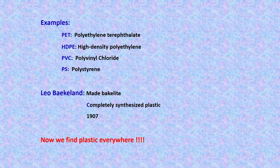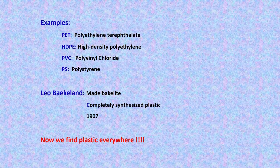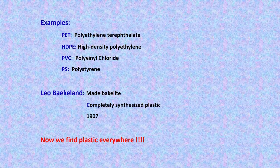Leo Baekeland was the first person who made a completely synthesized plastic, named Bakelite, back in 1907. Since that time a lot of work has been done, many plastics have been introduced, and now we find plastic everywhere.